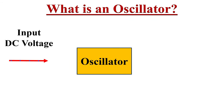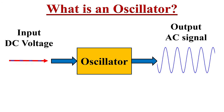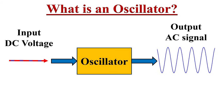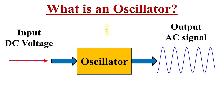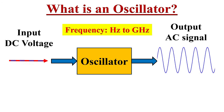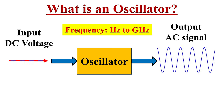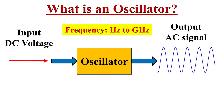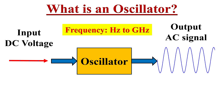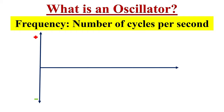An oscillator receives DC voltage as an input and produces an AC signal of a desired frequency. An oscillator can produce waves from a few hertz up to extremely high frequencies of several gigahertz.